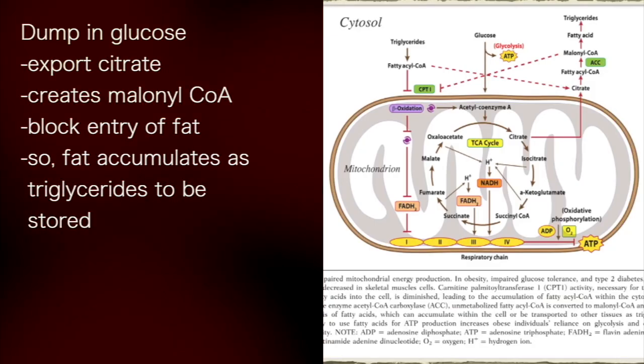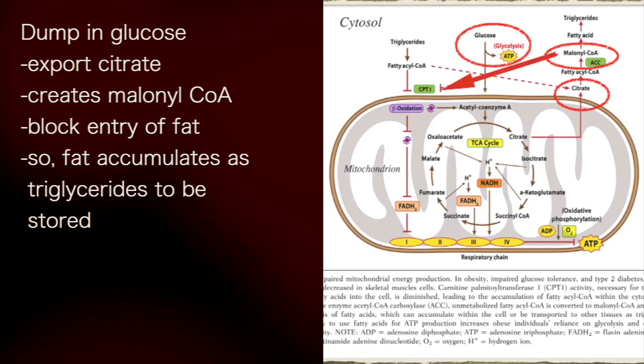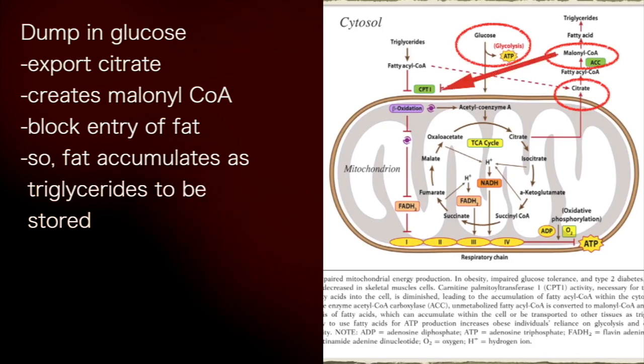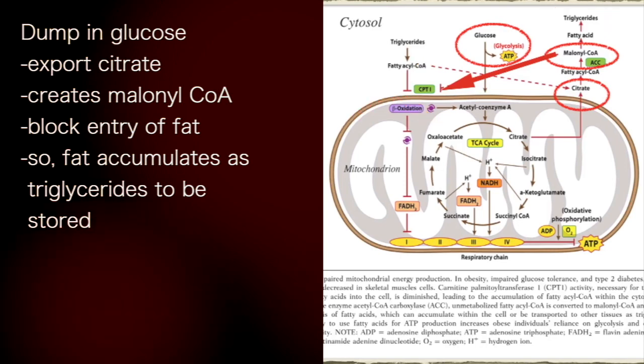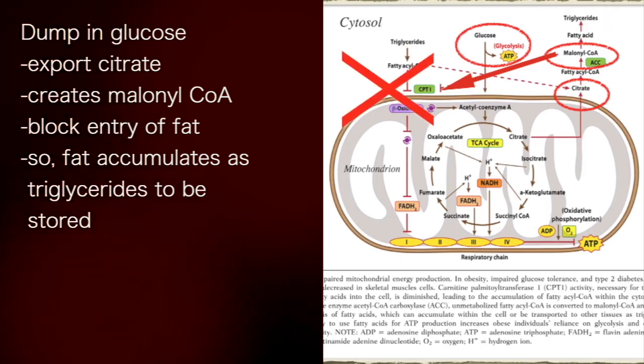Here's another illustration of the same thing. You dump in a bunch of glucose. You export citrate. Malonyl-CoA. First committed step to making fat. So you don't want to burn fat. And you block entry of fat into the mitochondria. And all your fat accumulates as triglycerides to be exported and stored. What's really going on here is your body is way too efficient to make fat and burn fat at the same time.